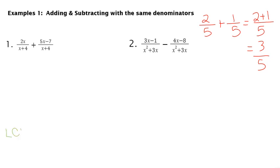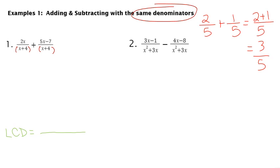Our least common denominator — we're really just going to focus on the denominator for each expression. In the bottom of this first one, we have x plus 4, and in the bottom of the second one, we have x plus 4. We're not going to be cross-canceling like we did with multiplication. The idea is we want to get the same denominator. So if they're not the same, we make them the same so we can add all the numerators up. In this case, our least common denominator is already x plus 4.